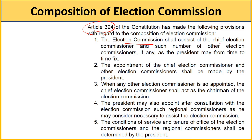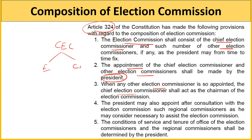Article 324 kehta hai ki Election Commission mein Chief Election Commissioner hoga aur other Election Commissioners jitne President time to time fix kare. Chief Election Commissioner aur other Election Commissioners ki appointment President karega. Agar teen election commissioners hain toh ek Chief Election Commissioner aur do other election commissioners honge. Chief Election Commissioner as chairman act karta hai.